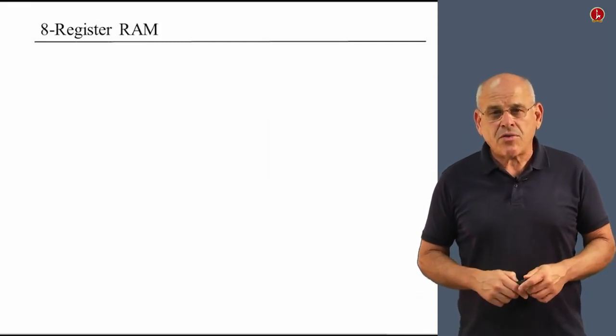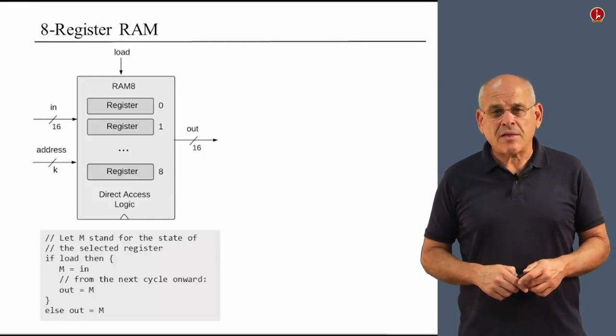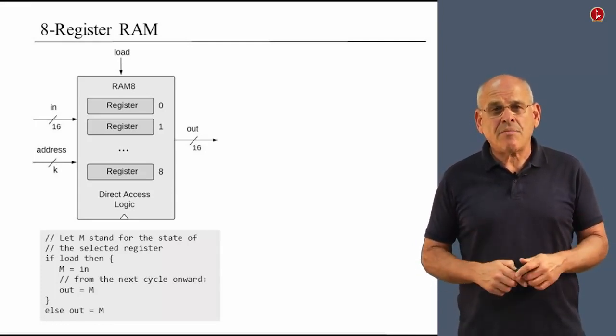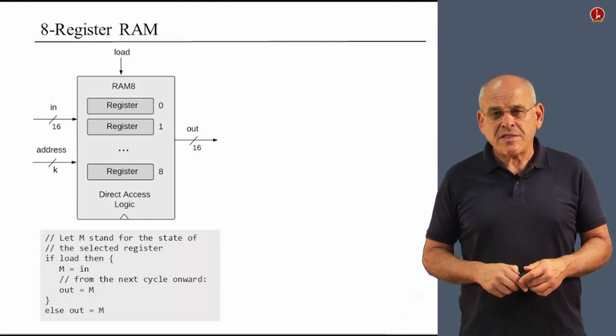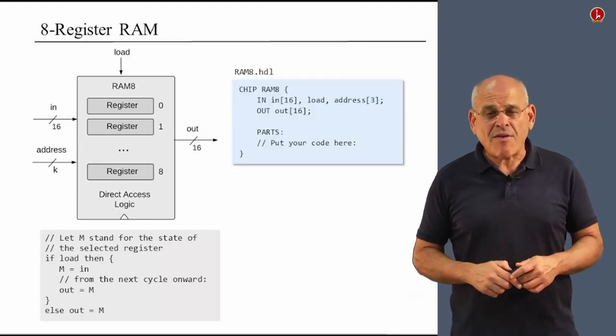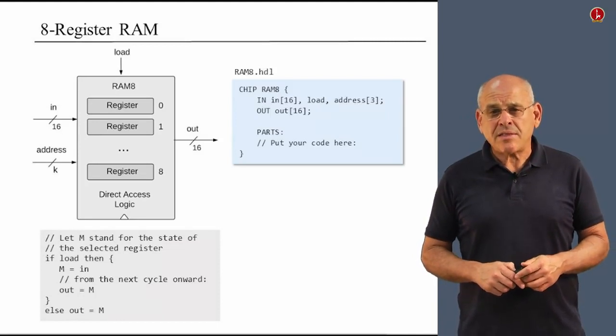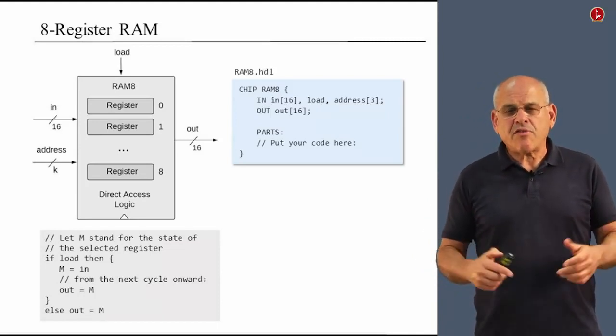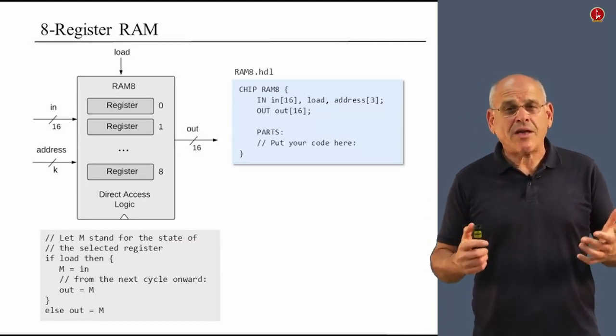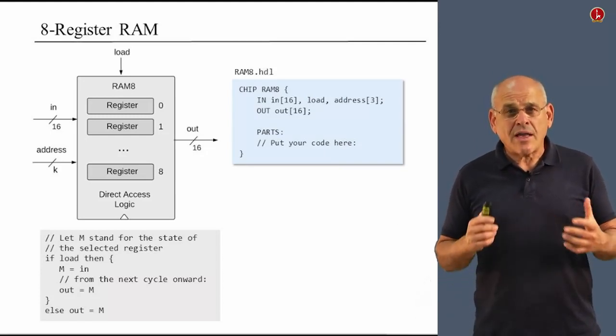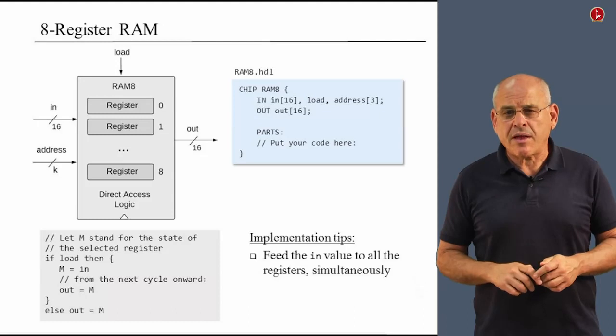So now we are ready to move on and build our first RAM device consisting of eight registers. Here is the API of this chip. Here is the stub file that describes its input and output pins. So now that we have all this information, let's figure out how we can actually build such a RAM device. I can give you two very important tips.